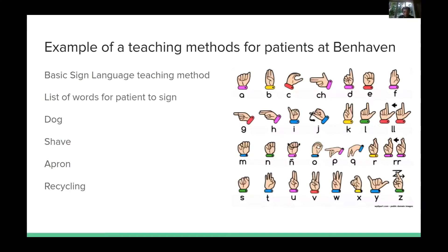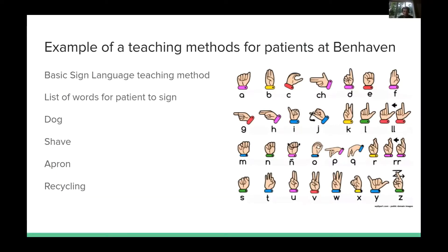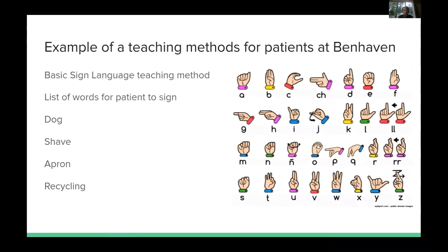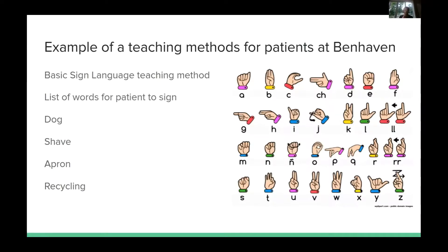Before moving on to my final volunteering experience, I'd like to teach a little sign language. The first words I picked up are very simple and almost straightforward. 'Dog' — you put two hands on your thighs, like a dog is about to jump up. 'Shave' — you make the shape with your hand and pretend you're shaving. 'Apron' — you pretend like you're putting on an apron. I also incorporated the letter Y: if you put Y up to your mouth, that means you want yogurt. 'Recycling' — a commonly used word at Benhaven — you make your fingers in the shape of an R and pretend you're making the recycling symbol.